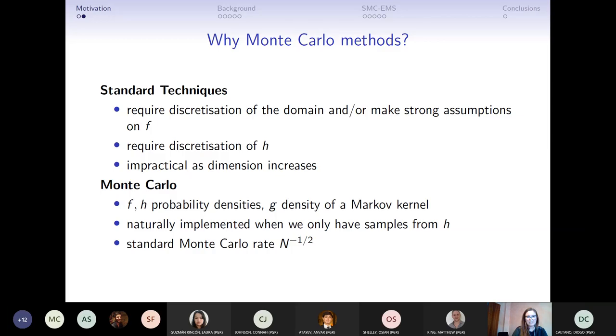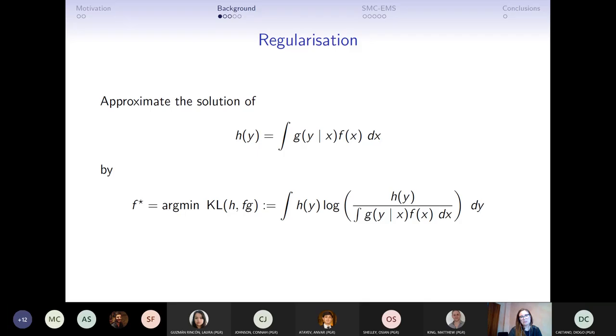So just a little bit of background, which is everything starts from regularization. Because the solution is not unique, we cannot hope to just solve the integral equation directly. We usually try to minimize some kind of distance between the left-hand side and the right-hand side of the equation. In this talk I'm going to focus on the Kullback-Leibler divergence, which is a divergence between probability measures and is defined in this way. This is not extremely important, but the reason why we look at this divergence is because it has nice links with maximum likelihood estimators. In fact, the function f minimizing the KL divergence is the maximum likelihood estimator for the solution f.